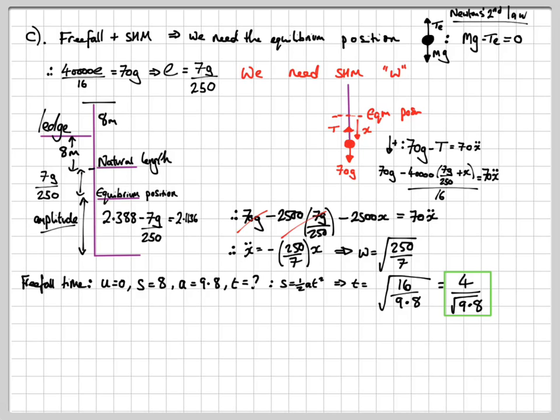So, the final job, then, is to find out how long the simple harmonic motion part takes. Now, you could use an equation for the displacement involving a sine wave or a cosine wave, whatever you prefer. However, I prefer to use this associated circle, so that's what I'm going to do.